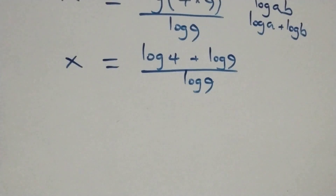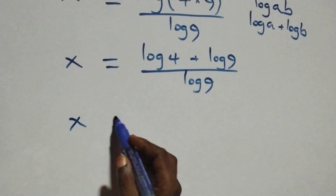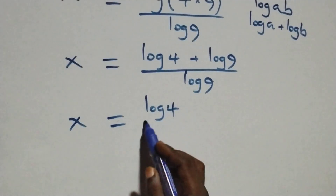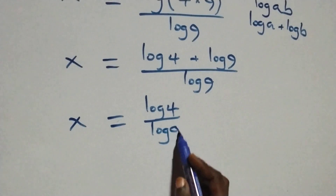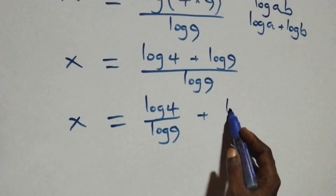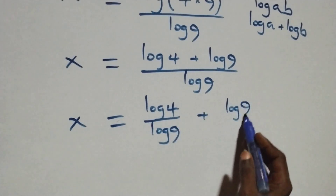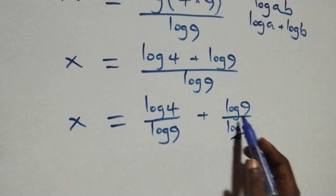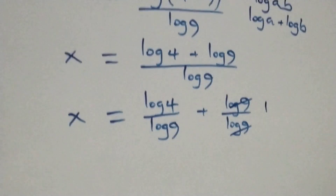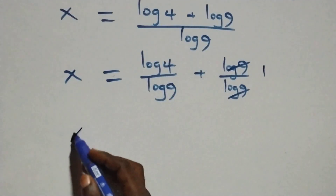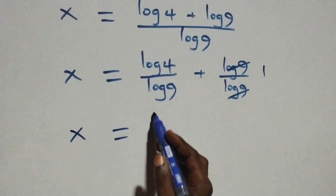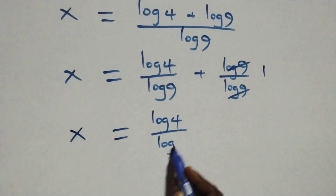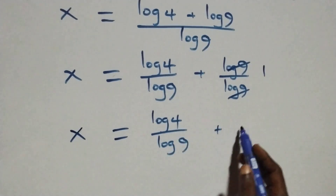Here we separate this into two fractions and what we have becomes x equals log 4 over log 9, plus log 9 over log 9. The log 9 cancels in the second fraction and 1 is left there, which implies x equals log 4 over log 9 plus 1.